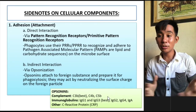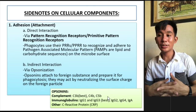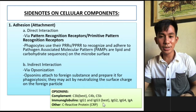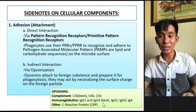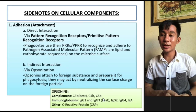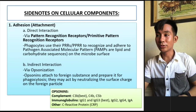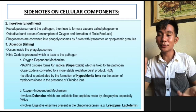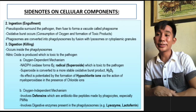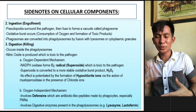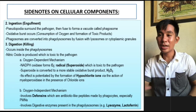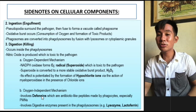Examples of opsonins are complement proteins like C3b — remember this is the best complement protein opsonin — as well as C4b and C5b. We also have immunoglobulins like IgG1 and IgG3, even IgG2 and IgG4. Remember, IgG3 is the best subclass of IgG as an opsonin. We also have IgA and C-reactive proteins. Moving on, after letter A is letter I: ingestion or engulfment. What to remember here is the formation of phagosomes.